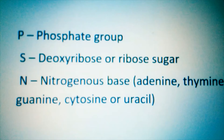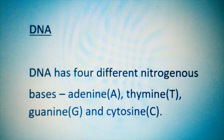Uracil and thymine differ according to the kind of nucleic acid. In RNA we have uracil, while in DNA we have thymine. For DNA, there are four different nitrogenous bases.